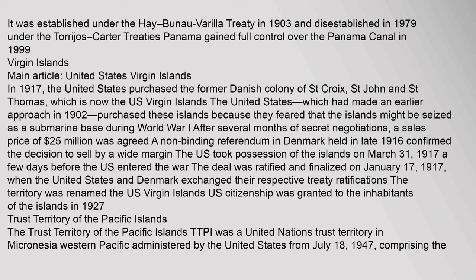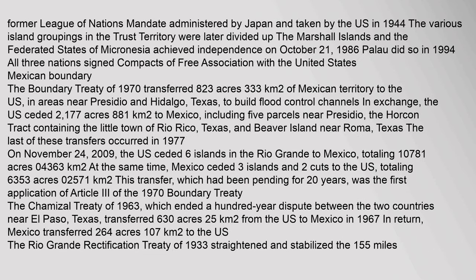Trust Territory of the Pacific Islands (TTPI) was a United Nations Trust Territory in Micronesia, Western Pacific, administered by the United States from July 18, 1947, comprising the former League of Nations mandate administered by Japan and taken by the U.S. in 1944. The Marshall Islands and the Federated States of Micronesia achieved independence on October 21, 1986; Palau did so in 1994. All three nations signed compacts of free association with the United States.